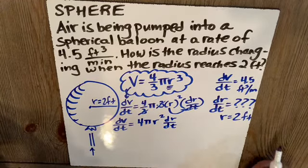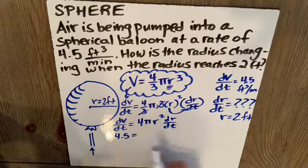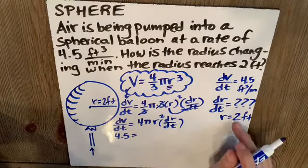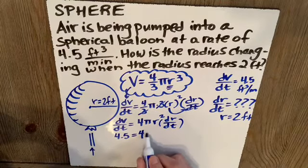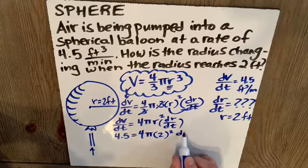Now we can plug and check and figure out what we have here. This is 4.5 for dV/dt. They gave us that. We want to know what is dr/dt when r is 2. So 4 pi 2 squared dr/dt.